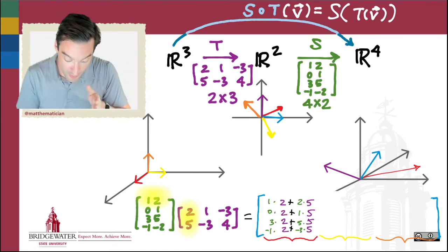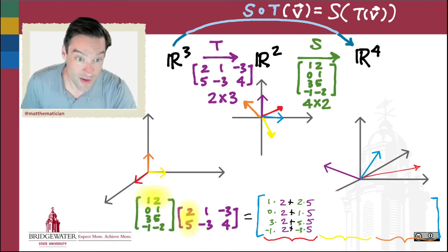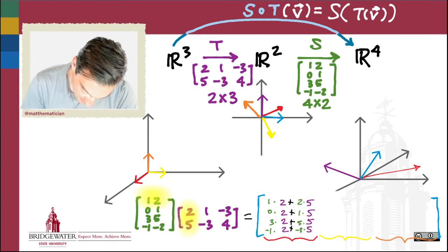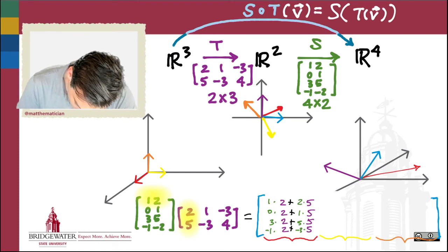We're just going across the rows of the first matrix in the product and down the columns, finding the dot products of those results. To do the second column, we would do the same thing but instead of using the first column of the second factor matrix, we would use the second column.